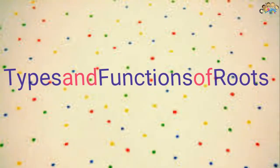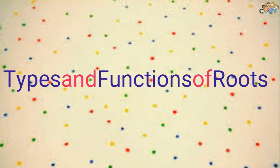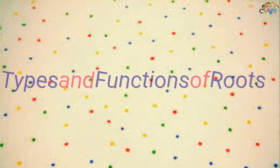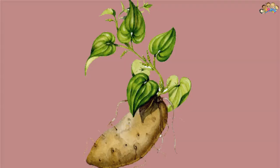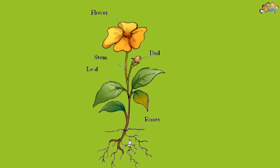Types and functions of roots. There are many different types of specialized roots, but two of the more familiar types include aerial roots and storage roots. Aerial roots grow above the ground, typically providing structural support. Storage roots, for example tap roots and tuberous roots, are modified for food storage.